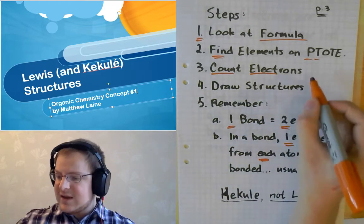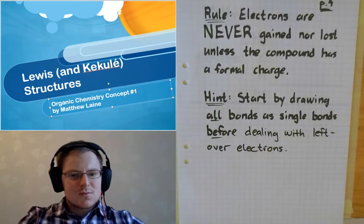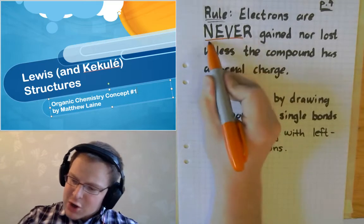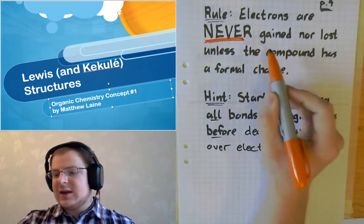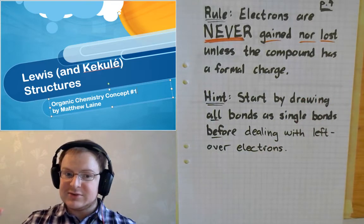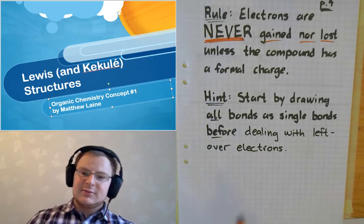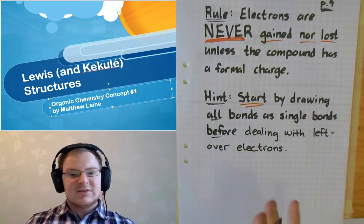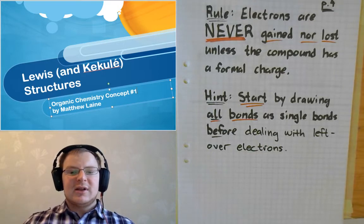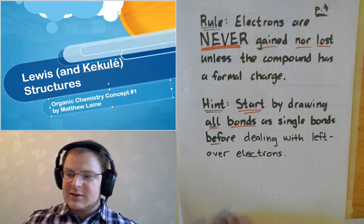The most important thing, however, is that we count the electrons, because if we don't, we can run into some sort of problems. Electrons never, ever, ever gained, nor are they lost, unless the compound has a formal charge. Counting electrons is important because you can screw up in a myriad of different ways if you don't count them properly. Something that I found to make it easier is if you start the process always by drawing all the bonds first, and draw them as single bonds. Then after you're done doing that, you deal with the leftover electrons. That is the single most foolproof way to make Lewis structures that don't have errors in them.